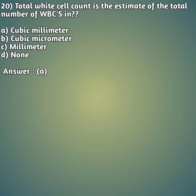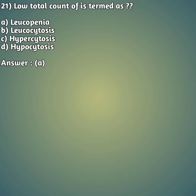Question 20: Total white cell count is the estimation of the total number of WBCs. What is the unit used for WBC count? Option A: cubic millimeter, option B: cubic micrometer, option C: millimeter, option D: none. The right answer is option A, cubic millimeter. Total white cell count for WBCs is given as cubic millimeter.